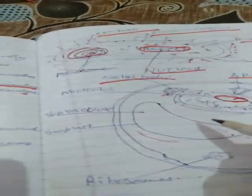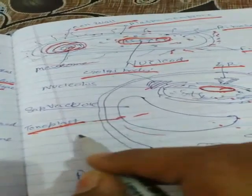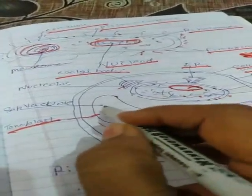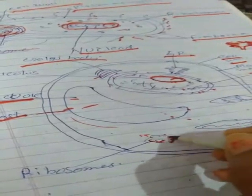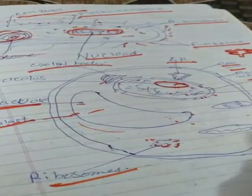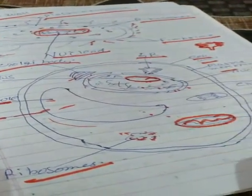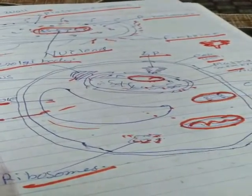A vacuole is also present, and the outer covering of this vacuole is called the tonoplast. The internal space is called the sap vacuole. A few granules called ribosomes are also present. The structure called mitochondria is present.